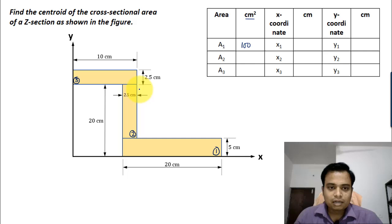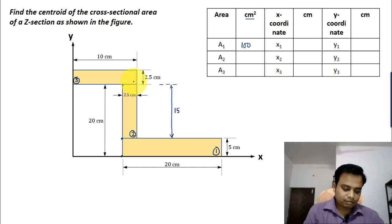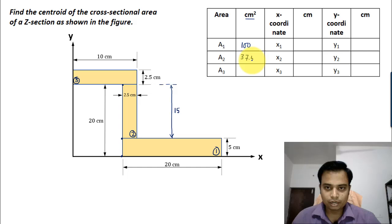Secondly, we have this rectangle over here. It has a width of 2.5 and a length of, well, that has to be seen. This distance is nothing but from this point to this point, it's 20, and from this point to this point it's 5. So 20 minus 5 is 15. So 15 multiplied by 2.5 is the area of this rectangle 2. That's 37.5.